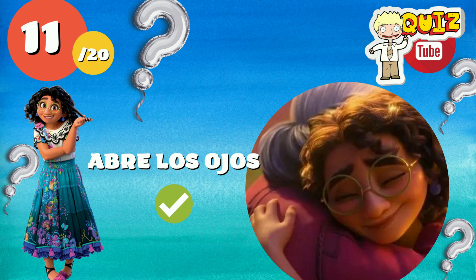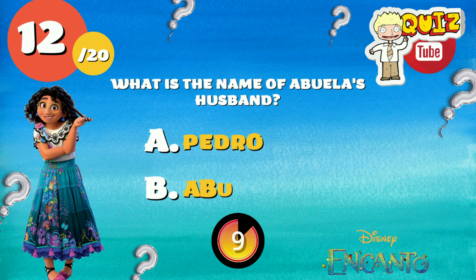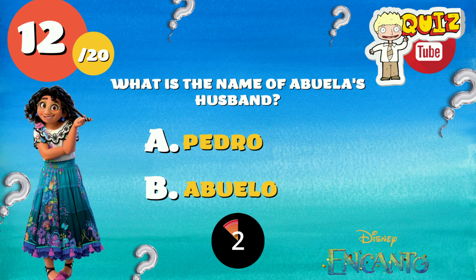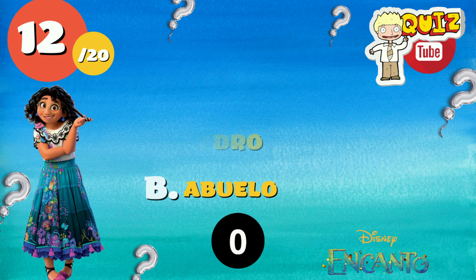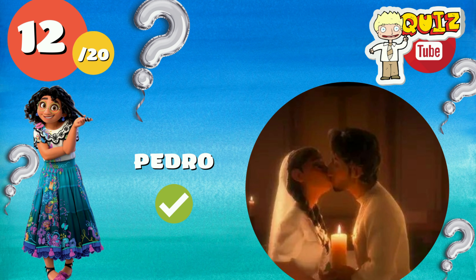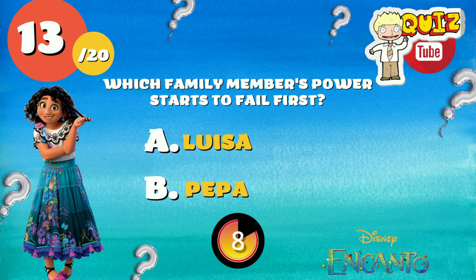The right answer is... What is the name of Abuela's husband? The right answer is... Which family member's power starts to fail first?